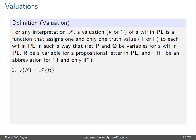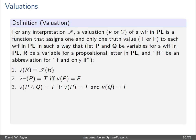Where things get interesting is with complex formulas. For negation: if the valuation of p is false, then the valuation of not-p will be true. For conjunction: the valuation of p-and-q is true if and only if both the valuation of p is true and the valuation of q is true. For disjunction: the valuation of p-or-q is true if and only if the valuation of p is true or the valuation of q is true — that is, one or the other or both disjuncts are true.